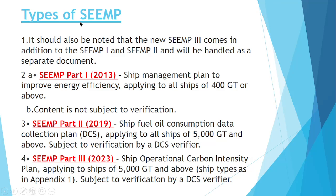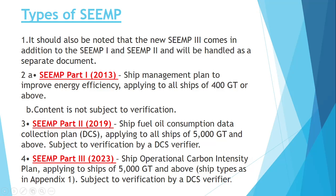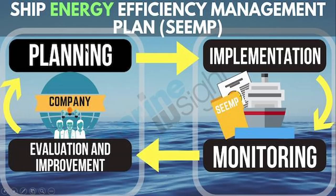SEEMP is divided into three parts: Part 1, Part 2, and Part 3. The first SEEMP came in 2013 as a Shipboard Energy Efficiency Management Plan. It came along with the EEDI — for ships constructed before the EEDI, it was applicable to all ships of 400 GT and above.